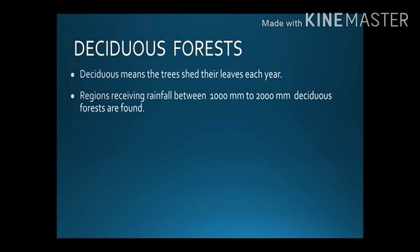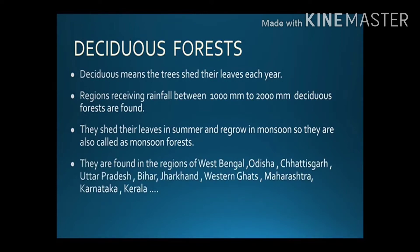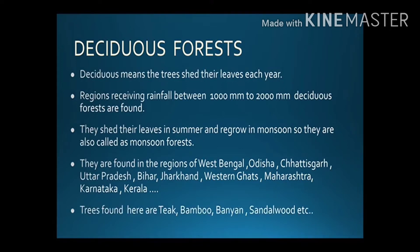Deciduous means the trees shed their leaves each year. Regions receiving rainfall between 1000 to 2000 millimeters have deciduous forests. They shed leaves in summer and regrow in monsoon, so they are also called monsoon forests. They are found in West Bengal, Chhattisgarh, Uttar Pradesh, Bihar, Jharkhand, Western Ghats, Maharashtra, Karnataka, and Kerala. Trees found here include teak, bamboo, banyan, sandalwood, etc.